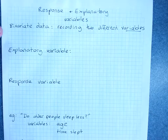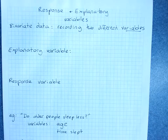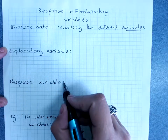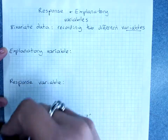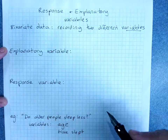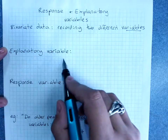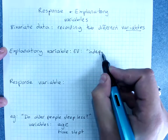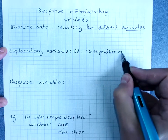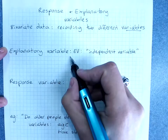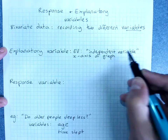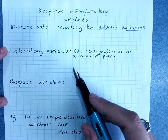We're going to learn a lot about associating two different variables. When we're looking at a link between two variables, we usually have what's called an explanatory variable and a response variable. We used to call these the dependent and the independent variable — that one depends on the other. So the explanatory variable, or EV, is what we used to call the independent variable. It goes on the x-axis of a graph or table, and it explains the change in the other variable.